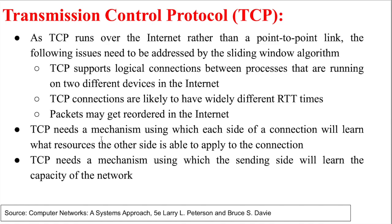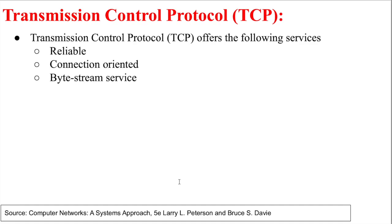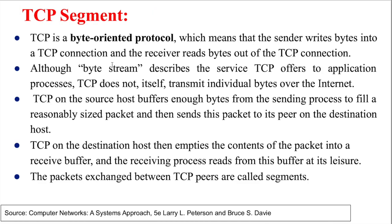TCP needs a mechanism by which each side of the connection learns what resources the other side can apply. Before setting up the connection, TCP must verify that the receiver can handle the speed of packet processing — otherwise packet drops occur at the receiver side. TCP also needs to learn the capacity of the entire network, including all intermediate devices, to determine whether they are capable of handling the traffic. In summary, TCP provides three services: reliable communication, connection-oriented service, and byte streaming.